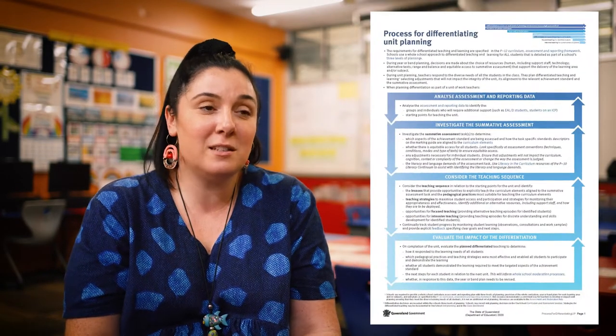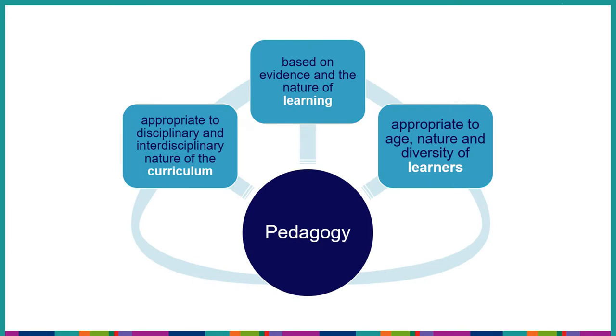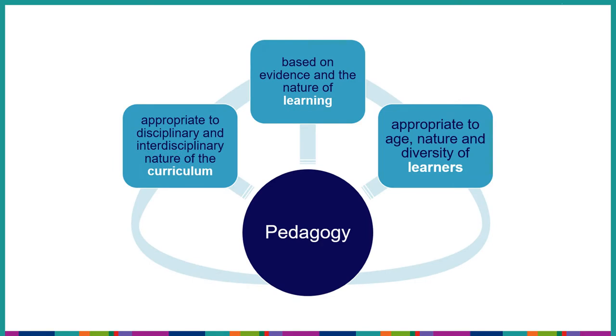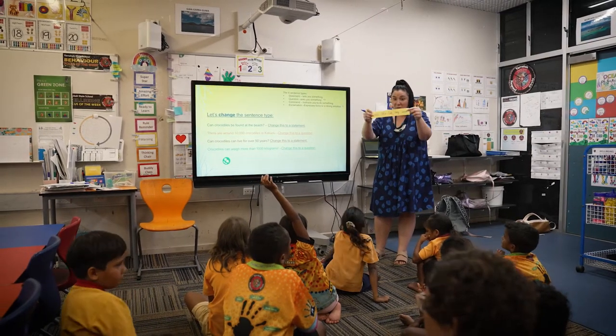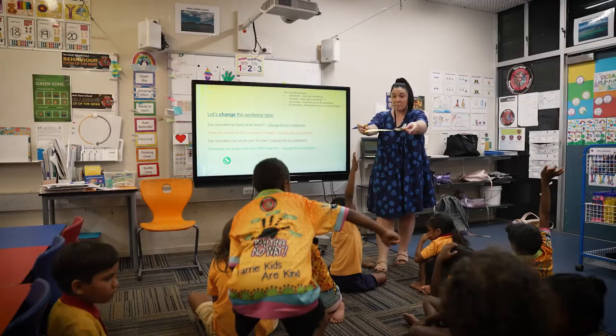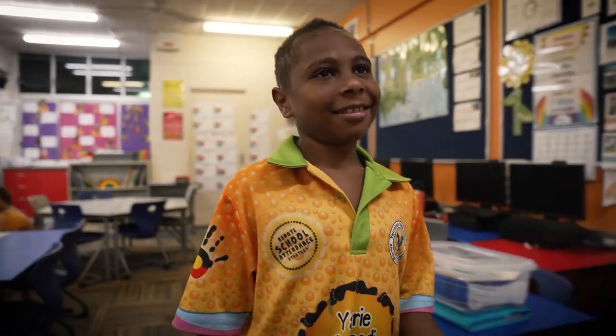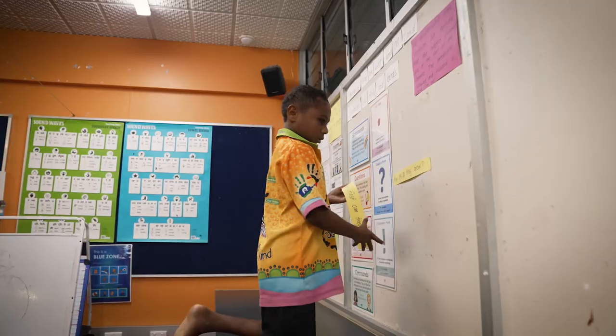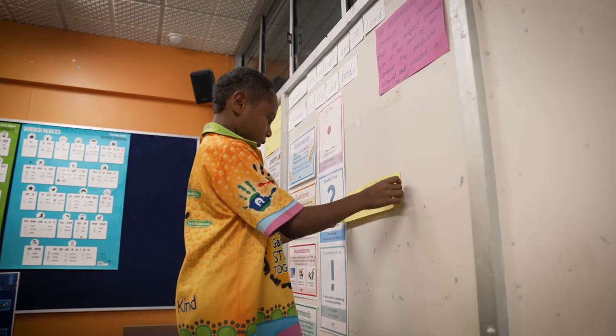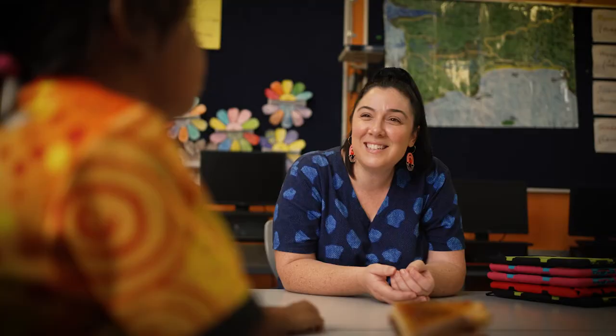We use the process for differentiating unit planning to cater for the needs and interests of our students. When determining the pedagogical practices and teaching strategies for each unit, we consider the nature of the curriculum, the learning and the learner. We align the marking guide with the achievement standards and then look at the content descriptions so we know what we need to teach and assess. We then create student-friendly ICANN statements and co-construct bumper-up walls within our classes. This helps students to access and refer to what they have been learning and understand the criteria for success. This allows students to reflect on their work and provides us with a clear way to give feedback on progress and goals.